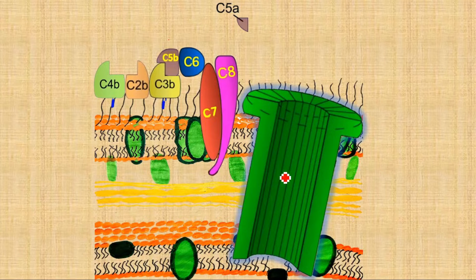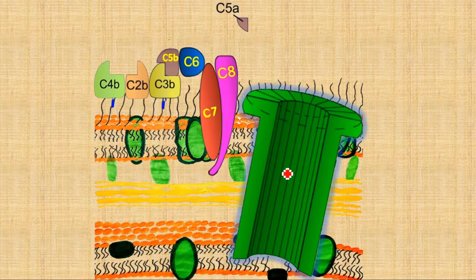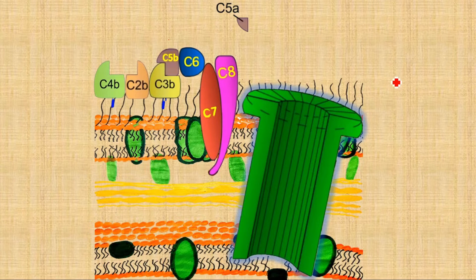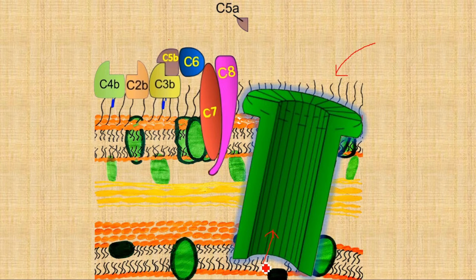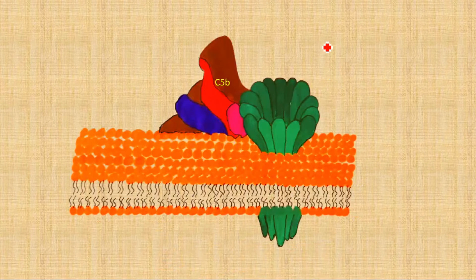Almost 18 C9 units are required to form this hole within the membrane of the pathogen. This pore will ultimately be responsible for the breakdown of the whole pathogenic particle. The bacteria will eventually rupture because a lot of water and other fluids will start moving from the outer space to the inner space, and there will also be movement of ions.